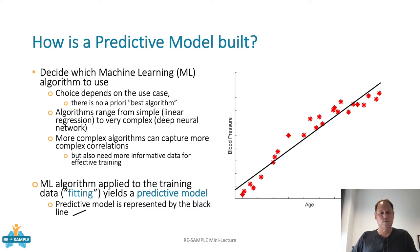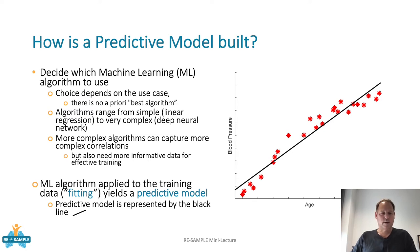The black line represents the linear correlation between the input variable age and the target variable blood pressure. The machine learning algorithm is applied to the training data, and this process is very often called fitting. As a result of this fitting process we obtain the predictive model represented by this black line.